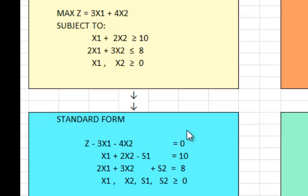I have subtracted surplus variable from the first one because it was greater than or equal to, and added a slack variable to the second one which was less than or equal to.